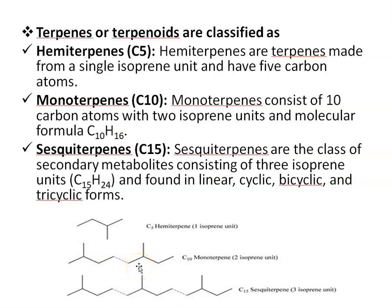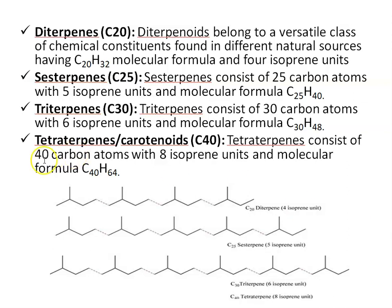Then sesquiterpenes — sesquiterpenes are a class of secondary metabolites consisting of 3 isoprene units with molecular formula C15H24. Sesquiterpenes are found in linear, cyclic, bicyclic, and tricyclic forms. Next is diterpenes — diterpenoids belong to a versatile class of chemical compounds found in different natural sources. Their molecular formula is C20H32, and their structure has 4 isoprene units.